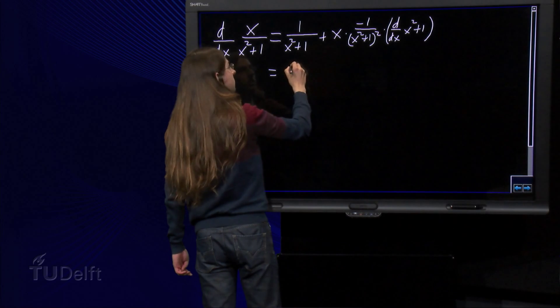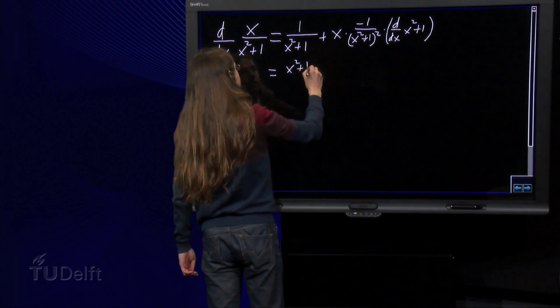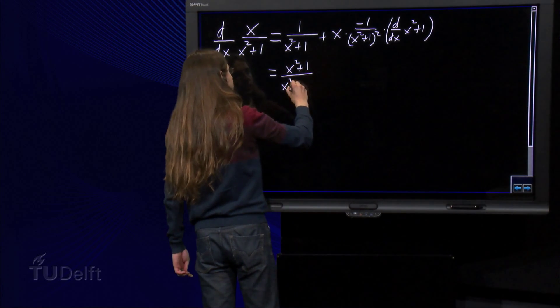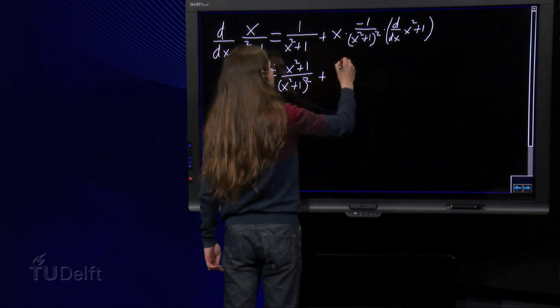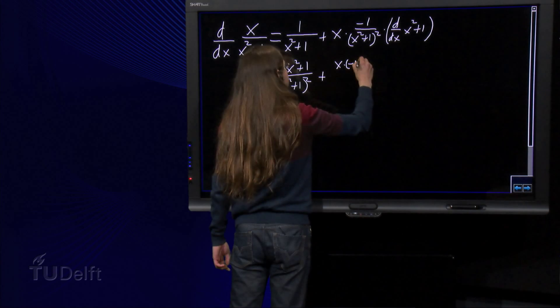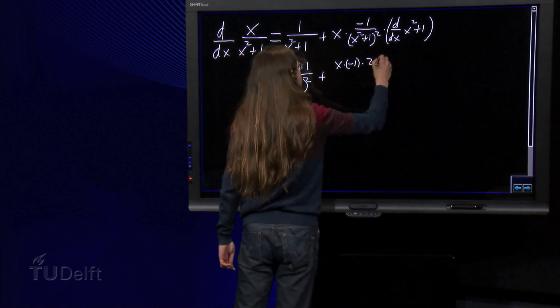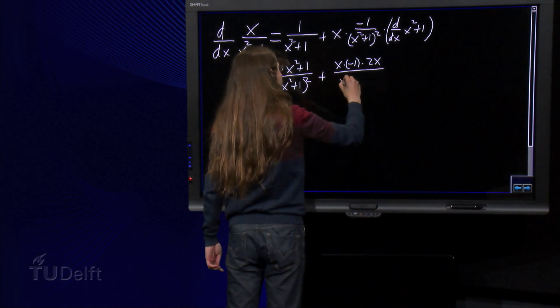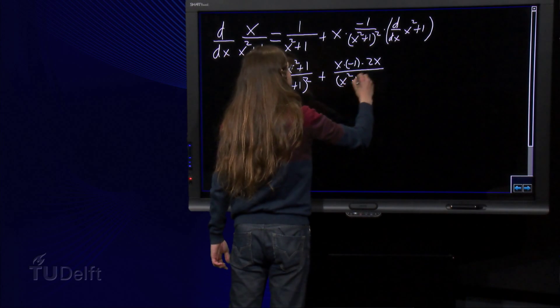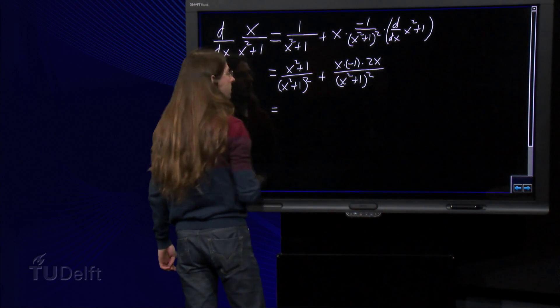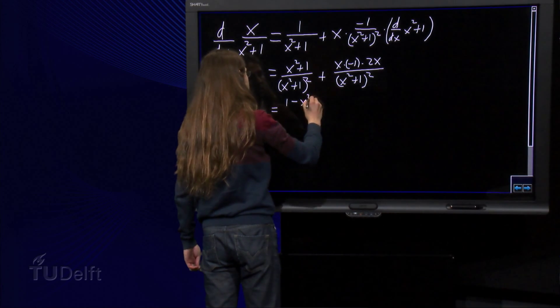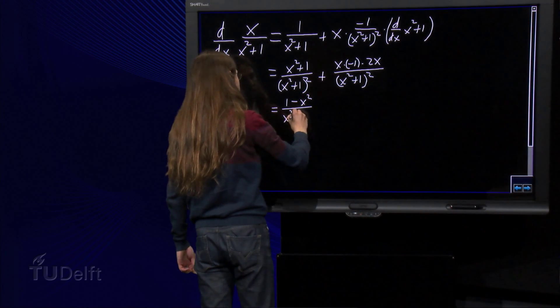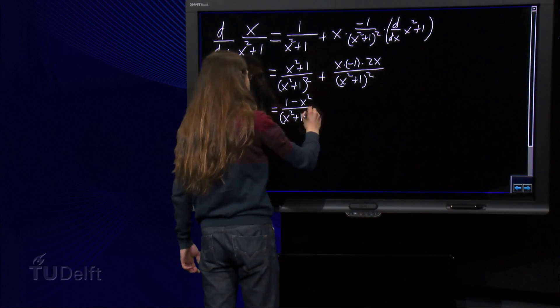Which becomes x² plus 1 over x² plus 1 squared, plus x times the derivative of x² plus 1 is 2x over x² plus 1 squared, which we can simplify to 1 plus x² minus 2x² is 1 minus x² over x² plus 1 squared.